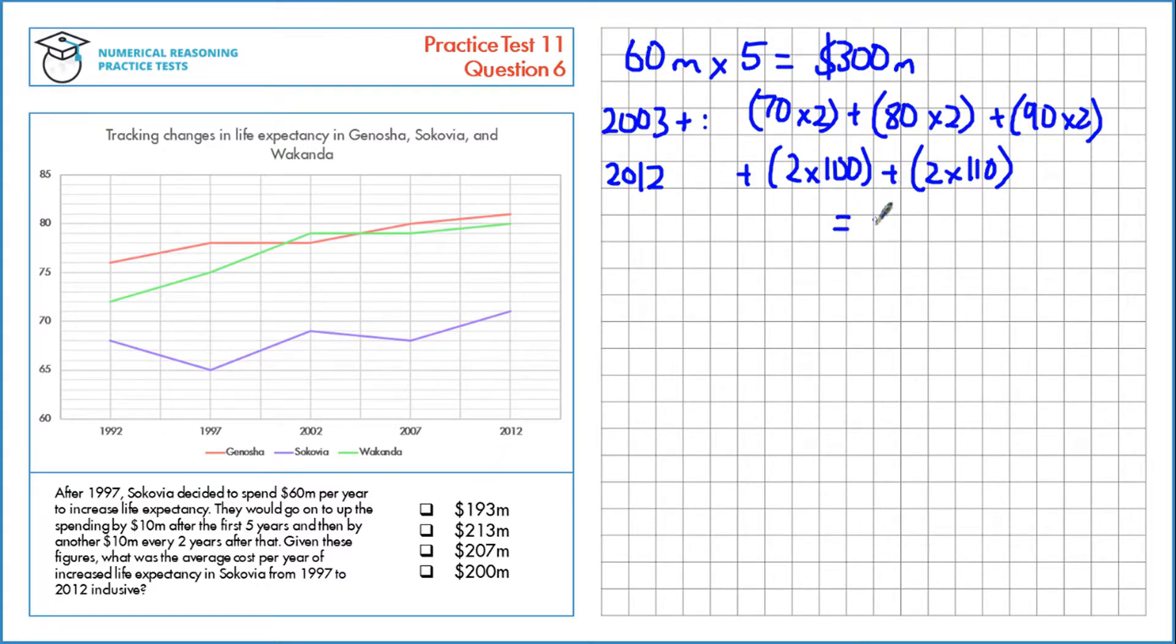The total of all of these is $900 million. So our total spend overall, this was the initial spend of the first 5 years, this was the next 10 years.